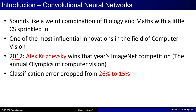CNNs actually gained popularity in the year 2012. There used to be a regular international challenge called ImageNet — a dataset with millions of images and 1,000 different categories of objects. Before 2012, the error rates reported were around 26%. But in 2012, a system based on CNN was submitted to this challenge, and it resulted in a significant drop in error from 26% to 15% — a very big jump of around 9%. This is where CNNs actually gained popularity.